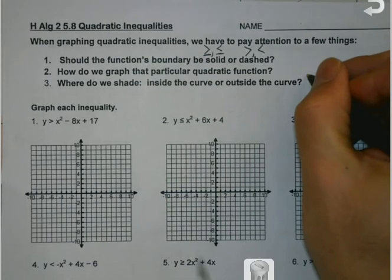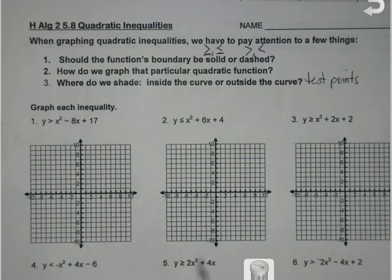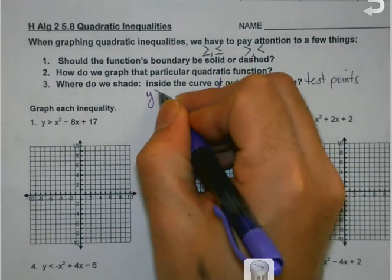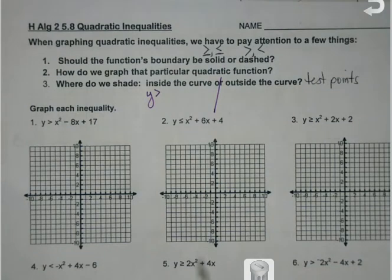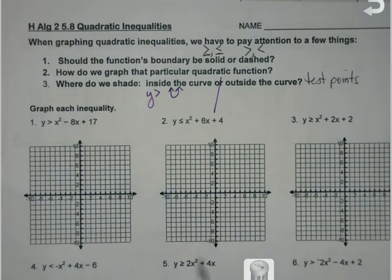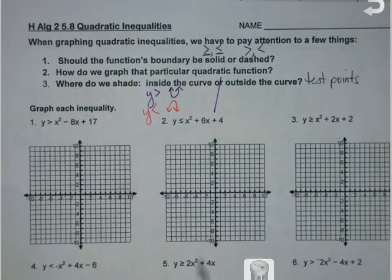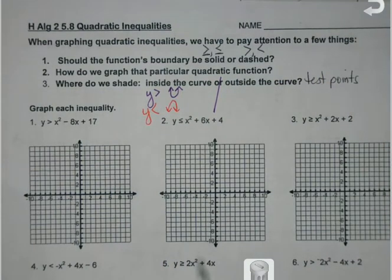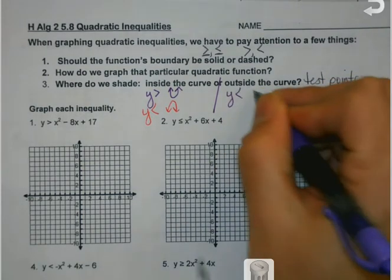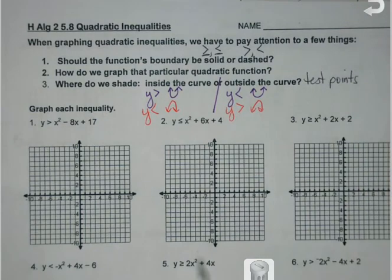And then where do we shade? There's options here. We can use test points, which we will take a look at on a couple of these to see whether to shade inside or out. But there's also kind of a generalization that we can use. When you have one where your y values are greater than, if we go upward as y is greater than, we're going to shade inside the curve. If our parabola opens downward, that would be the cause for us to shade inside the curve when y is less than. And it's just the opposite with outside. If y is less than and we're opening up, we're going to be outside the curve. And if y is greater than and we open down, we're going to shade outside the curve as well. We will talk about test points as we go through these.